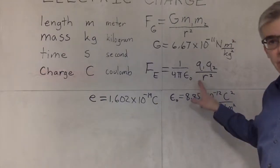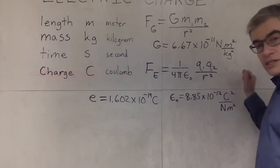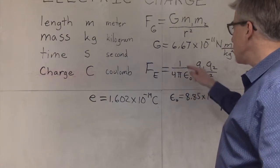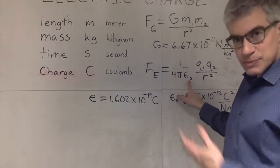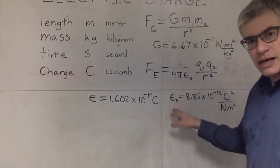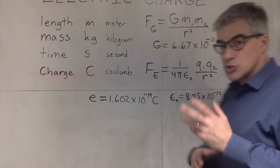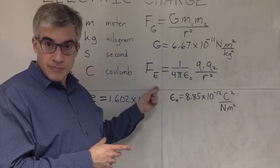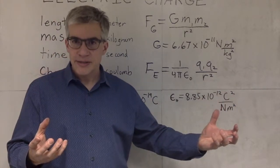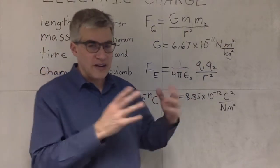Electric force is an inverse square law — if the charges get twice as far apart, the force is four times weaker. It's proportional to the size of each charge. The constant of proportionality is 1/(4πε₀), where ε₀ is called the permittivity of free space and equals 8.85 × 10⁻¹² C²/(N·m²). That gives 9 billion newtons of force between one coulomb and one coulomb one meter apart — way stronger than 67 trillionths of a newton. It only requires a tiny amount of electric charge to have an effect that overwhelms gravity.